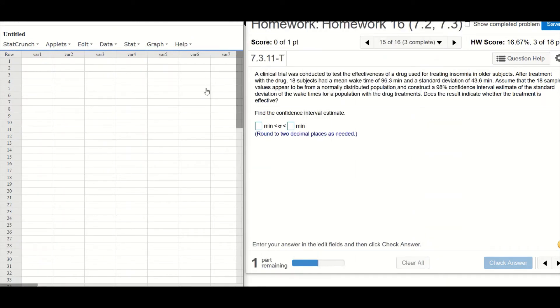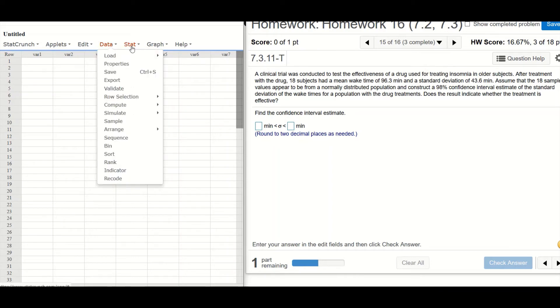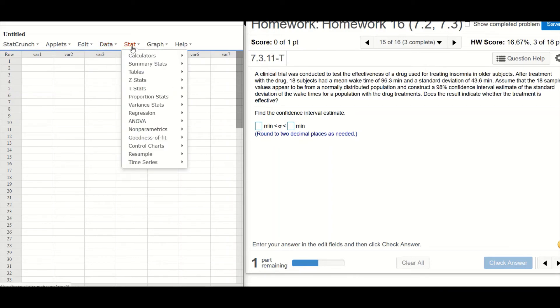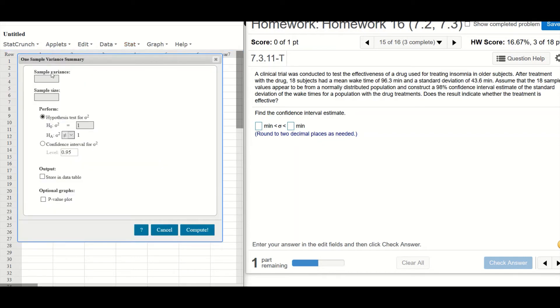So where I will go to is under Stat, go to Variance Stats. And here, since we're given the summary, go to One Sample with Summary.